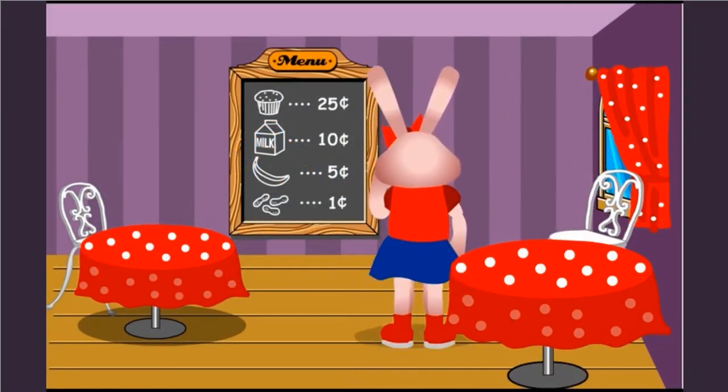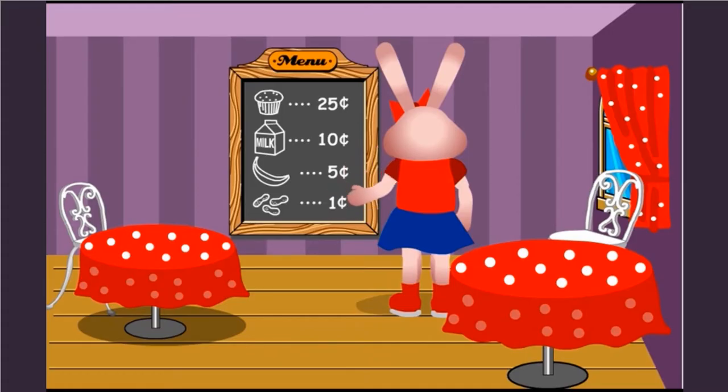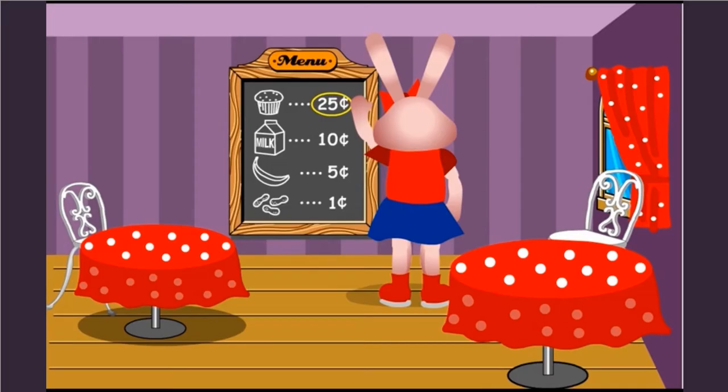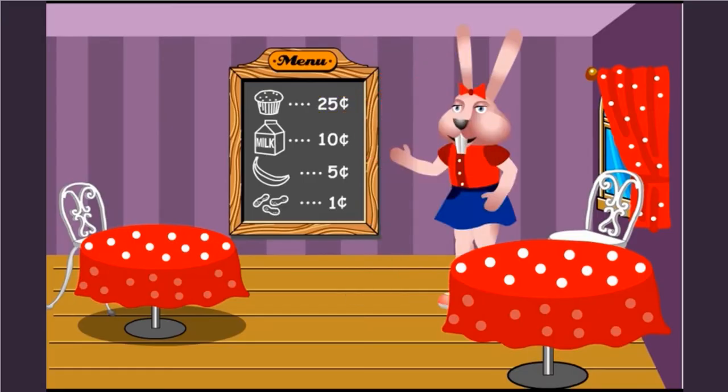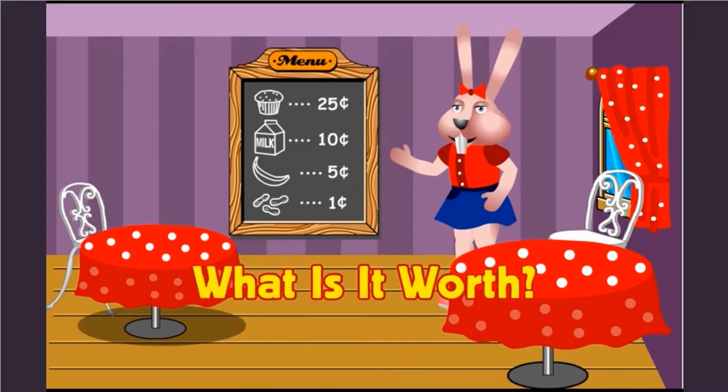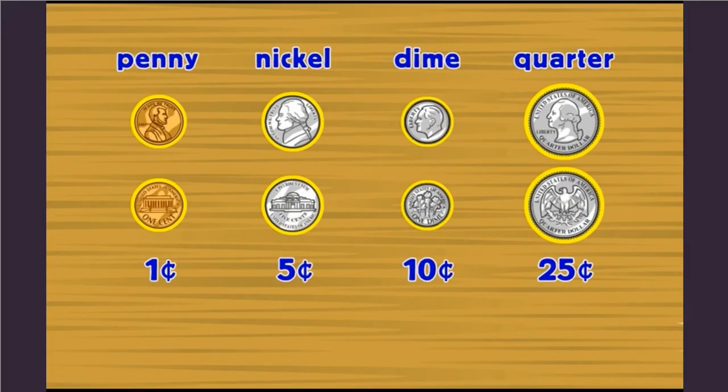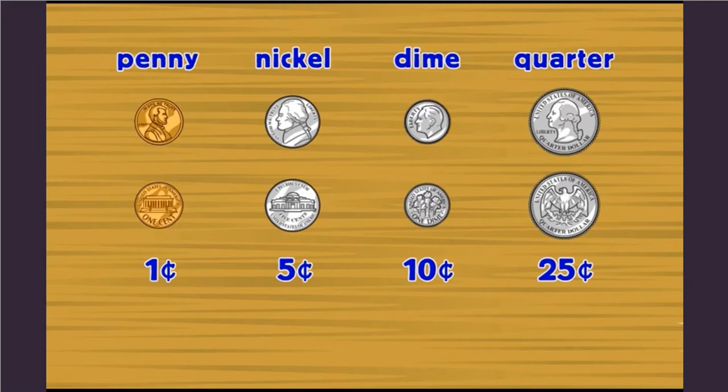Let's get started with this fun lesson from kindergarten math. In Harriet's piggy bank, students will learn to identify a penny, nickel, dime, and quarter, and the value of these coins. Welcome to What Is It Worth? Here are the four coins. A penny, a nickel, a dime.